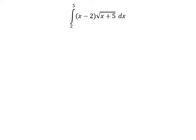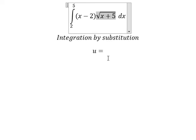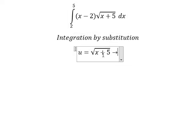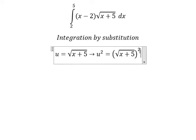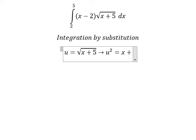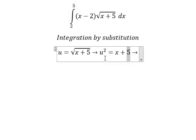We need to use integration by substitution. I will set u equals the square root of x plus 5. Then we square both sides to cancel the square root, giving us u² = x + 5. Because we still have x, we subtract 5 from both sides, so u² - 5 = x.